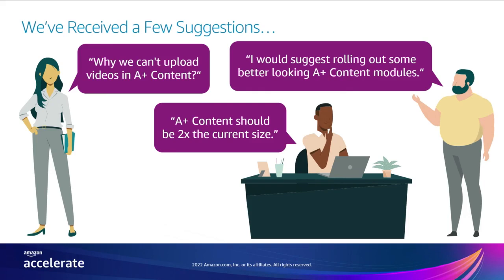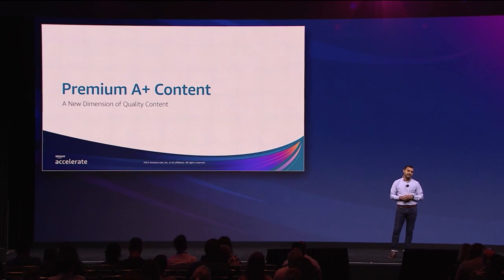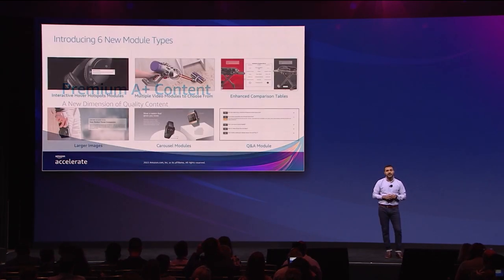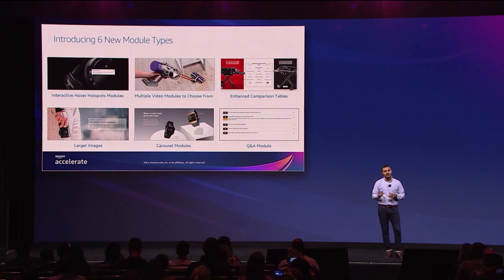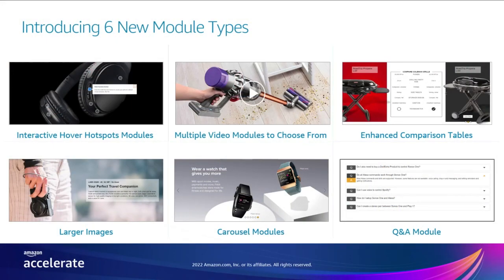However, we realize there are opportunities to make A-plus content even better. A lot of you already use A-plus content and have shared suggestions with us to improve it. For example, many of you wanted to include video in A-plus content, some wanted bigger-sized modules, and others asked for interactive and better-looking module options. Well, we've heard you, and that's why we're announcing the launch of premium A-plus content for seller brand owners. Premium A-plus content brings a completely new dimension to product detail pages. With premium A-plus, you now have access to six new best-in-class module types.